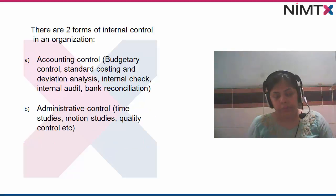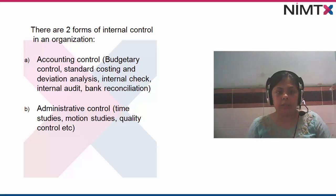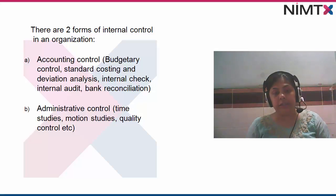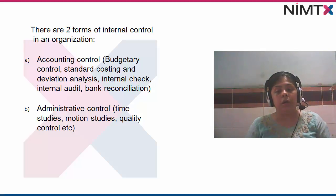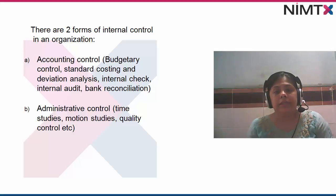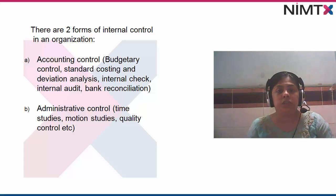There are two types of internal controls: accounting control and administrative control. Accounting control includes budgetary control, standard costing and deviation analysis, internal check, internal audit, and bank reconciliation. With budgetary control, you can check if you are going as per the budget and identify any deviation. Standard costing and deviation analysis checks if there is any difference from the expected average. Administrative controls include time studies, motion studies, quality control, etc.